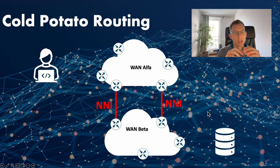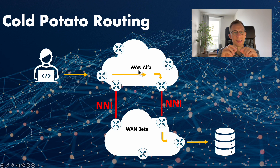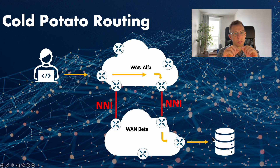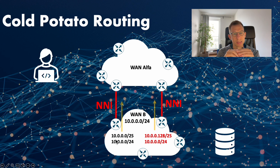On the other hand, we have cold potato routing. In this technique, the data is kept in WAN Alpha for as long as possible and handed over to WAN Beta at the NNI that is closest to the destination on WAN Beta. This method utilizes WAN Alpha's backbone and minimizes WAN Beta backbone usage. We can achieve this by carefully advertising specific routes and ranges from WAN Beta to WAN Alpha, such as advertising subnets that are closer to the NNI and the rest of WAN Beta as a supernet for backup.